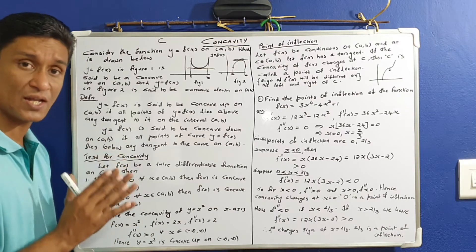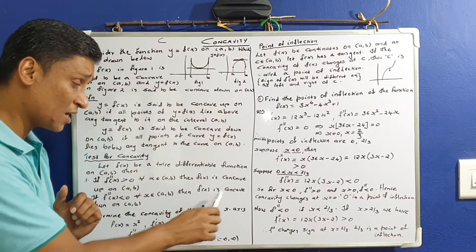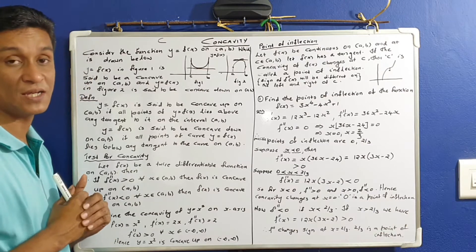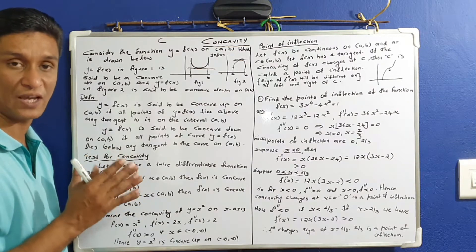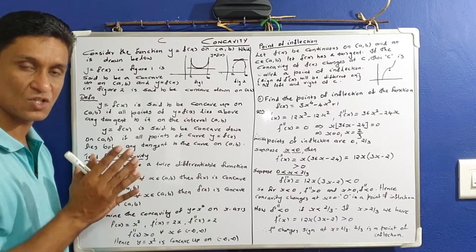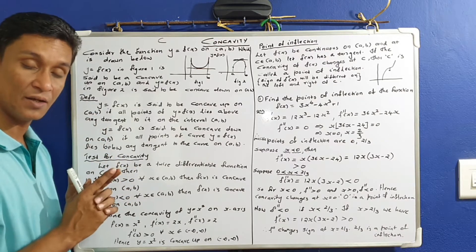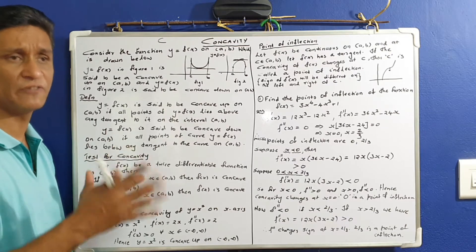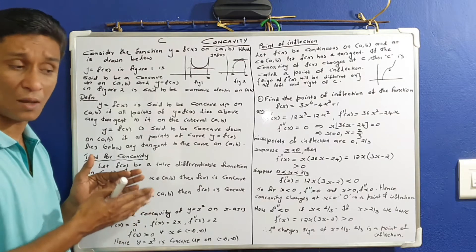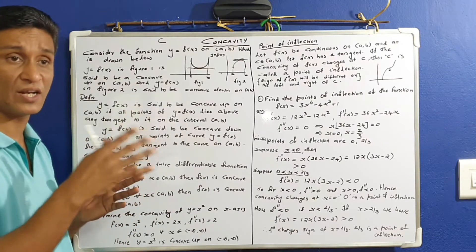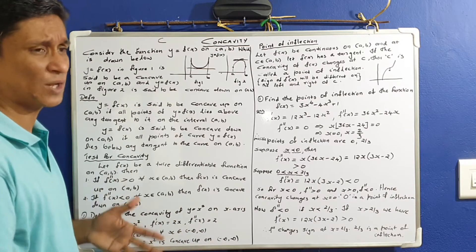If f double dash x is greater than 0 for all x element of ab, then f of x is concave up on ab. If f double dash x is less than 0 for all x element of ab, then f is concave down on the given interval ab.